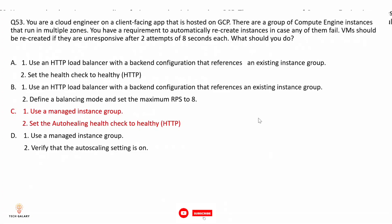Option A: use an HTTP load balancer with a back-end configuration that references an existing instance group, and set the health check to healthy — not correct because this references an unmanaged instance group, and auto-healing is not supported by unmanaged instance groups. Option B: use an HTTP load balancer with a back-end configuration that references an existing instance group and define a balancing mode with maximum RPS of 8 — also not correct because without a managed instance group, even with a load balancer, there is no auto-healing.